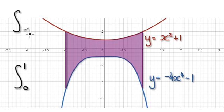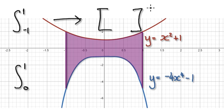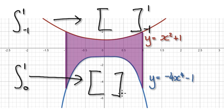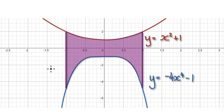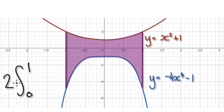The reason why this is easier is because when you evaluate at minus 1 you get a messier calculation, whereas evaluating at 0 is a lot easier. So it's simpler to evaluate from 0 to 1 and then multiply the whole thing by 2 at the end.